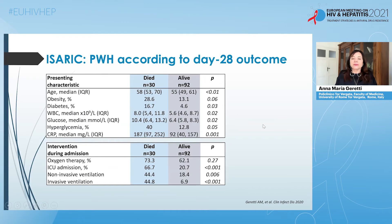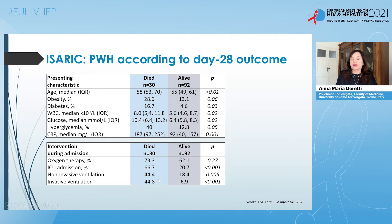Comparing people with HIV who died within the ISARIC analysis to those alive at day 28, those who died were slightly older, more likely to have obesity or diabetes, and at presentation had higher glucose and elevated CRP. They were also more likely to require admission to intensive care and ventilation.